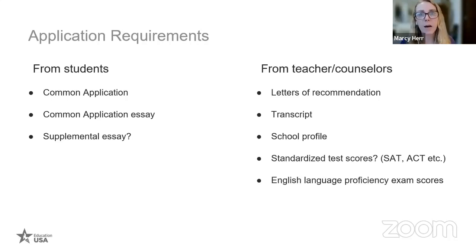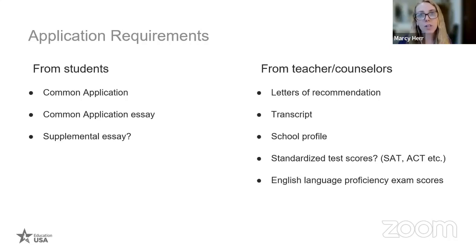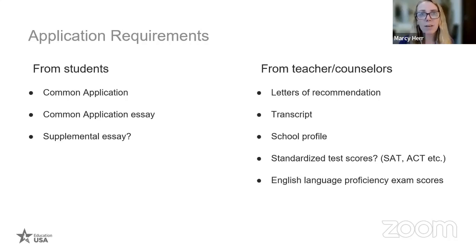I suggest you put together a timeline and understand how different deadlines come together. From students, for universities that use the Common Application, we require the Common App itself, the Common Application essay, and possibly a second essay. From your teachers or school counselor, we'll need a letter of recommendation, your transcript showing all your high school grades, and your school profile — information about the school, your classes, how many students there are, where it's located, and where students go after graduating.